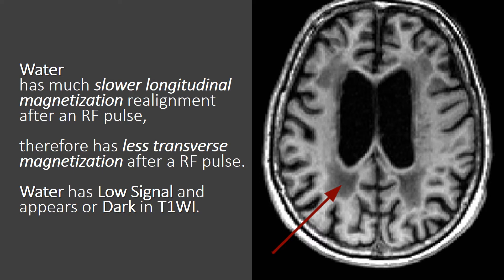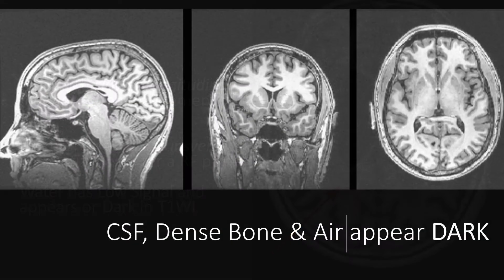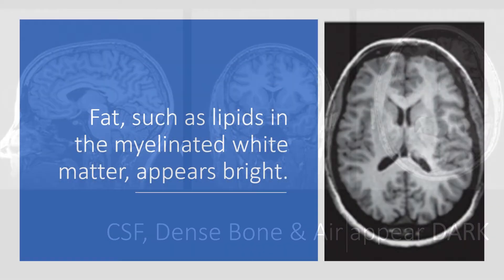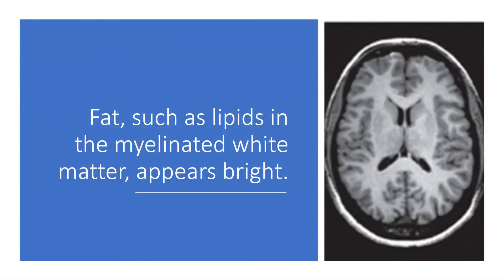So water has low signal and appears dark in a T1 weighted image. CSF, dense bone, and air appear dark. Fat, such as lipids in the myelinated white matter, appears bright.